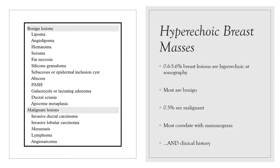Now let's talk about hyperechoic breast masses at ultrasound. They are relatively uncommon — breast lesions at sonography are hyperechoic approximately 0.6 to 5.6% of the time. Most are benign; however, about 0.5% are malignant. So if you see a hyperechoic breast mass, it is not exclusively a descriptor for a benign lesion, and malignancy cannot be entirely excluded on that descriptor alone. You must correlate with mammogram and clinical history.